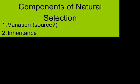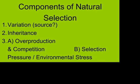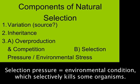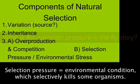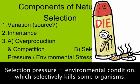Another thing that has to be true for natural selection to occur is that there has to be some environmental stress, or what we call selection pressure. Selection pressure is some condition in the environment that is selectively causing the death of some organisms and not others. In this scenario, the selection pressure is the insecticide — it's killing the non-resistant flies and leaving the resistant flies alive.